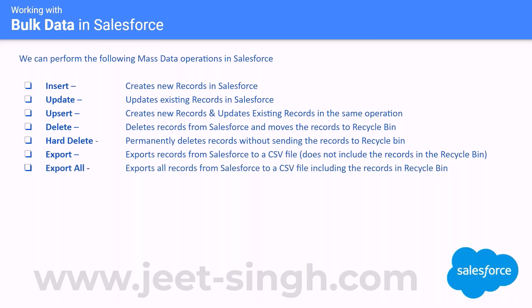There's another option called Export All. Export All does the same thing but will also include the records from the recycle bin. It exports all the records in the main object as well as the records sitting in the recycle bin. So if you need to export all records including those in the recycle bin, use Export All. If you do not want the recycle bin records, use the regular export operation.